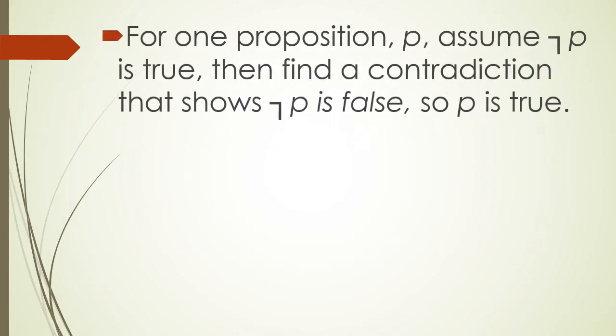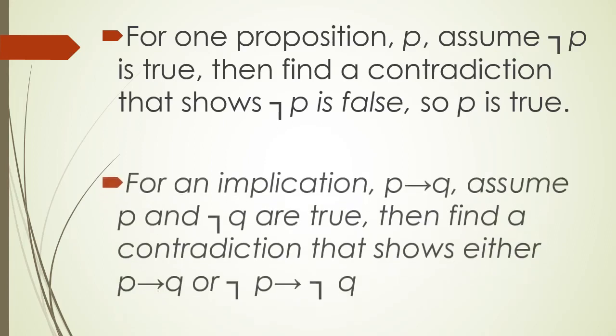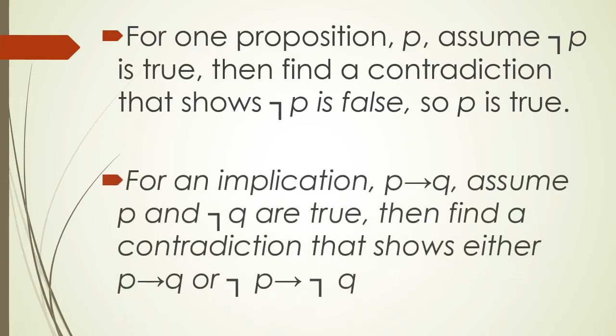For one proposition P, assume not-P is true, then find a contradiction that shows not-P is false, so P is true. And for an implication P implies Q, assume P and not-Q are true, then find a contradiction that shows either P implies Q or not-P implies not-Q.